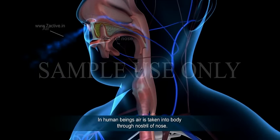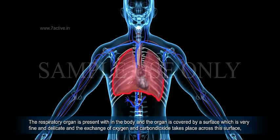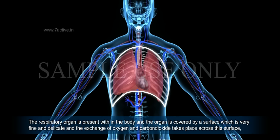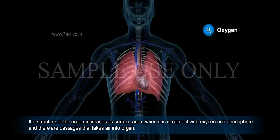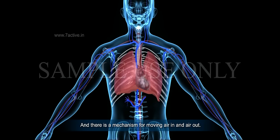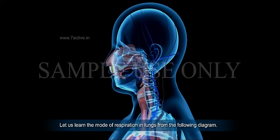In human beings, air is taken into the body through the nostril or nose. The respiratory organ is present within the body and is covered by a very fine and delicate surface, across which the exchange of oxygen and carbon dioxide takes place. The structure of the organ increases its surface area when in contact with an oxygen-rich atmosphere, and there are passages that take air into the organ, along with a mechanism for moving air in and out. Let us learn the mode of respiration in lungs from the following diagram.